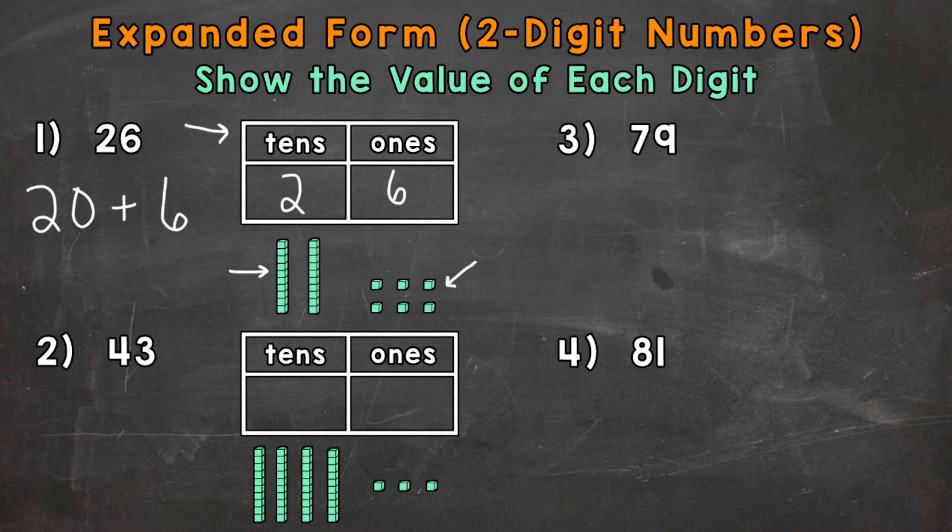When we put a number into expanded form, we always start with the greatest valued digit. That means the digit furthest to the left. So we started with the 2 here that had a value of 20, which we wrote right here. And then we went to the 6. We went to the right.